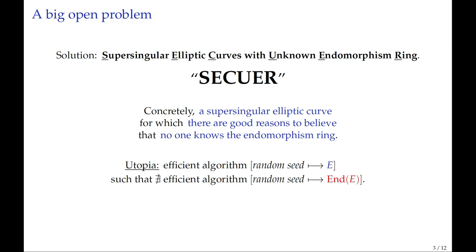Getting rid of this extra structure and constructing a curve without the extra information is a big open problem in our field. We decided to name it SECURE, which is an acronym. That is a supersingular elliptic curve for which you have good reasons to believe that no one knows the endomorphism ring.